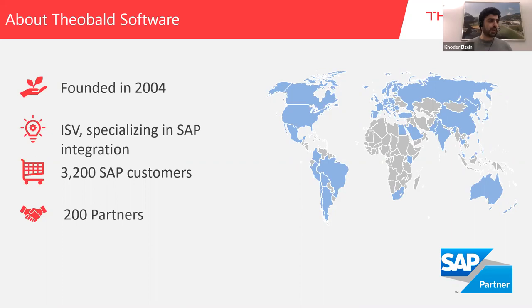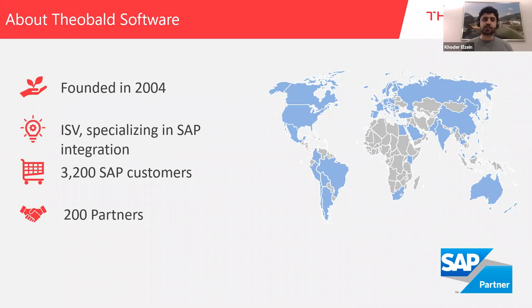Today we are represented in four geographies. The company headquarters is in Stuttgart, Germany, and we have sales offices in Seattle in the US, as well as in France and Hong Kong to serve our customers in those regions.